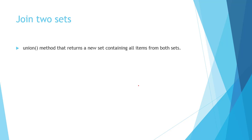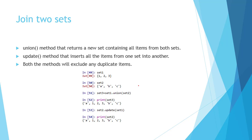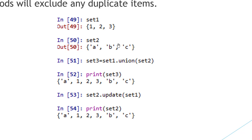Next, we will see how to join two sets. Two methods are used for this. The union method returns a new set containing all items from both sets. The update method inserts all items from one set into another. Both methods will exclude duplicate items. For example, set1 contains 1, 2, 3 and set2 contains a, b, c. Using the union method, set3 = set1.union(set2) — set3 now contains elements of set1 as well as set2. If you want to update set2 with elements of set1, write set2.update(set1), so set2 is updated and elements of set1 are added into set2. Therefore set2 will contain elements of both sets.